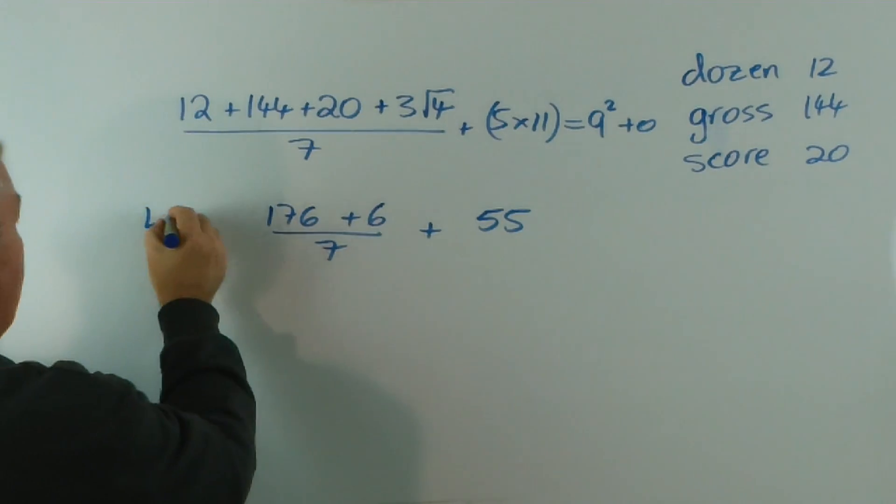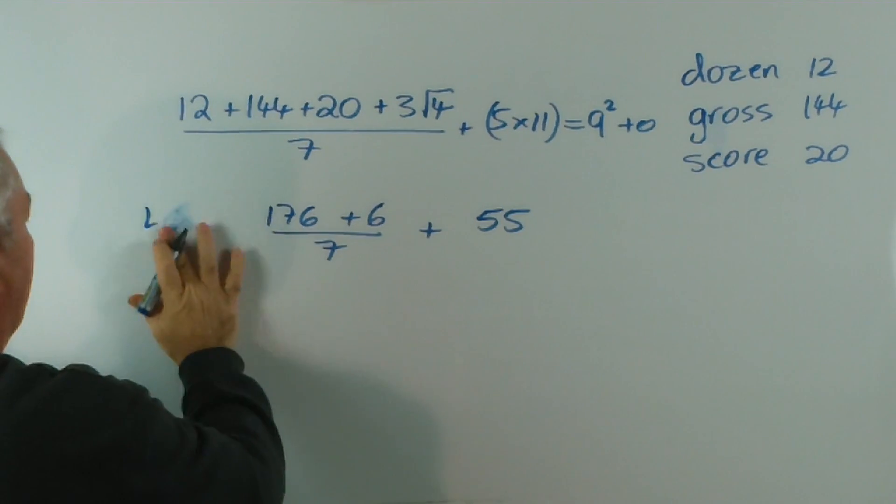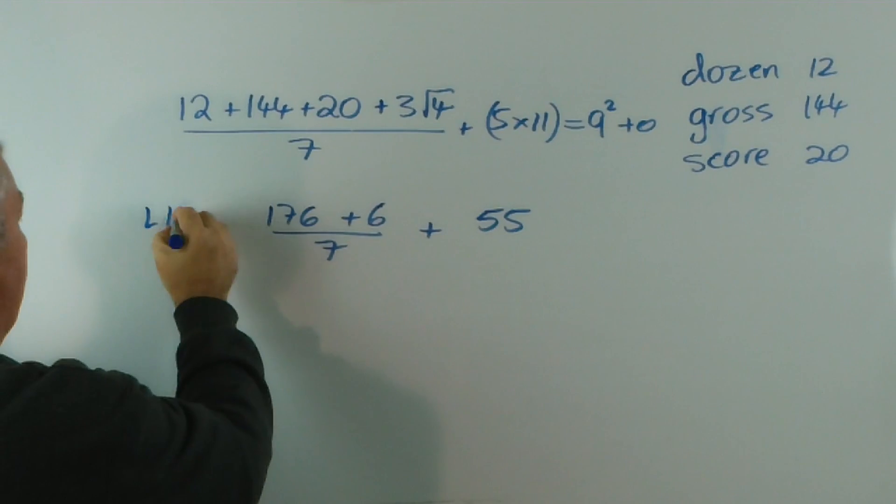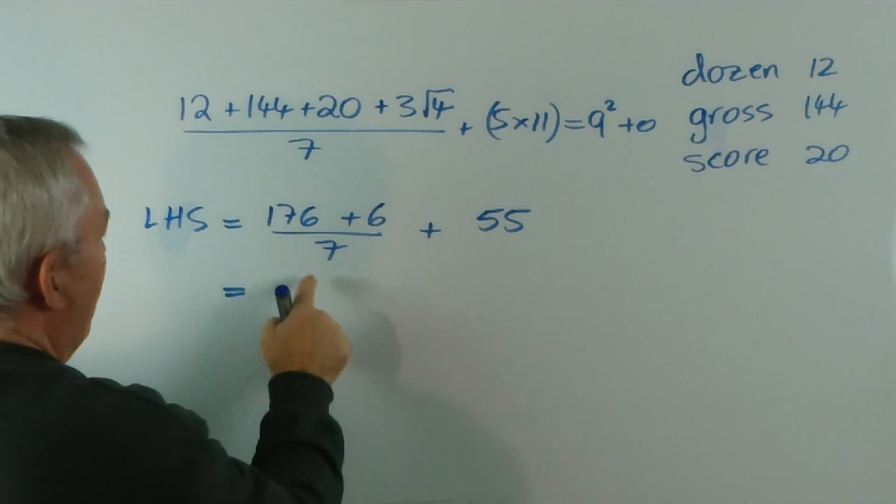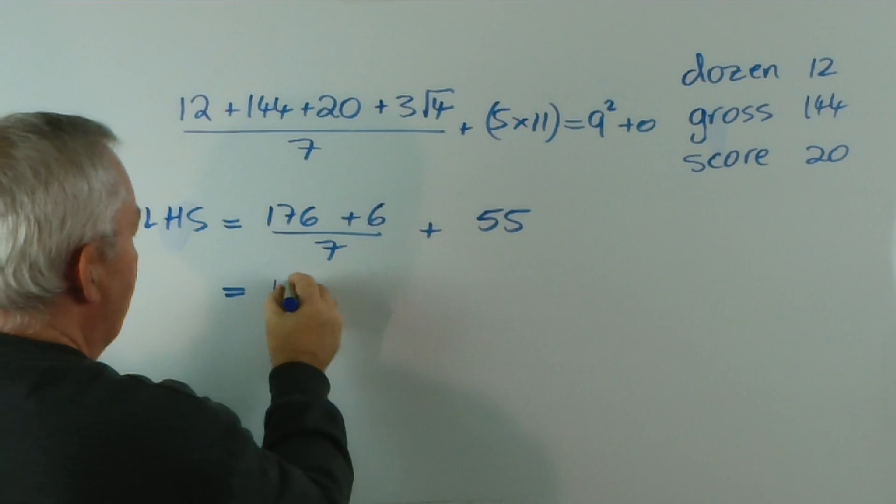Strictly speaking, I'd say the left-hand side of the equation is this... 176 plus six is 182.